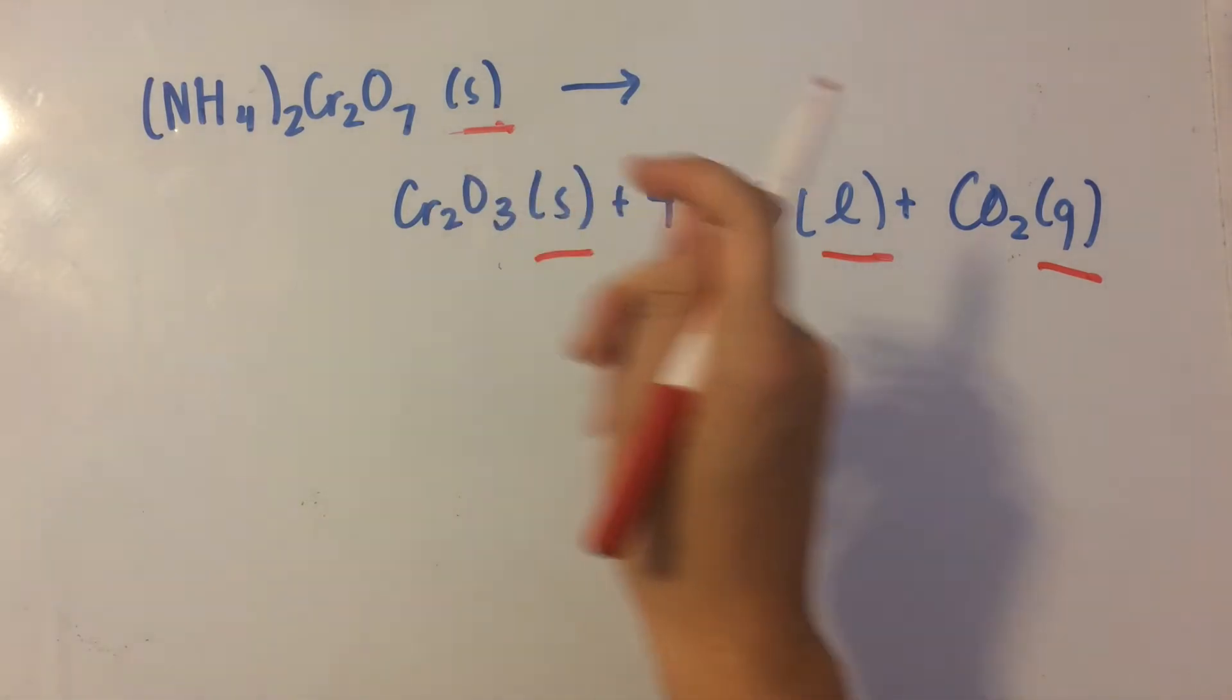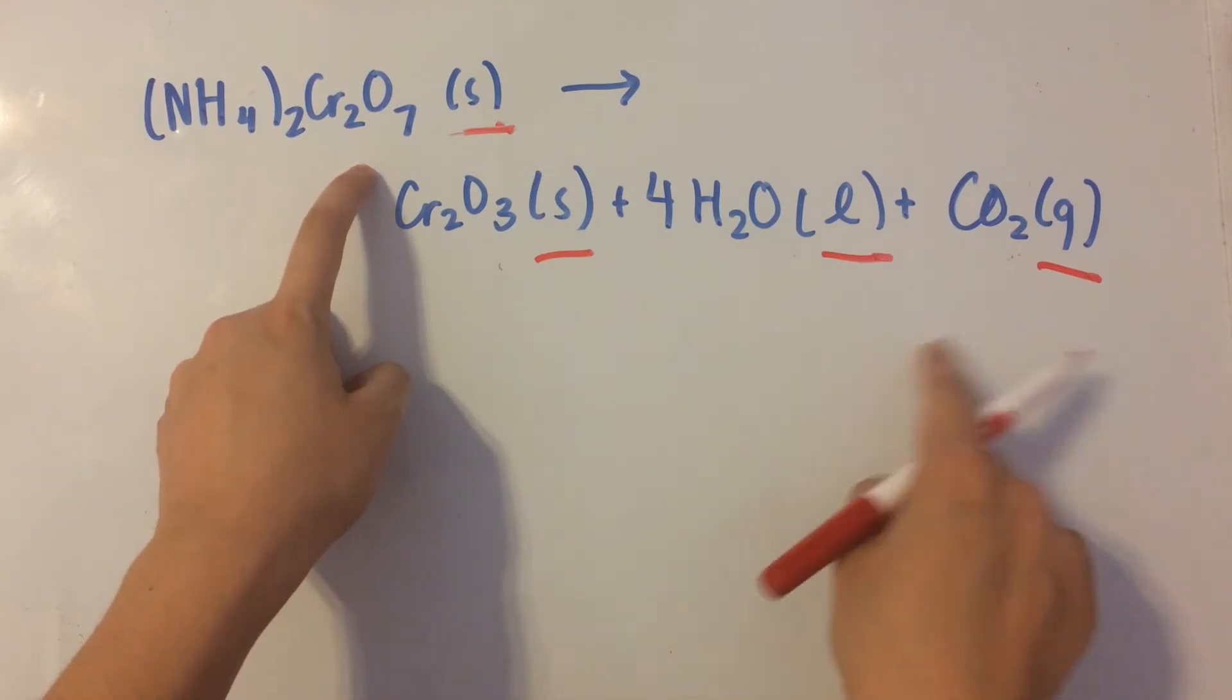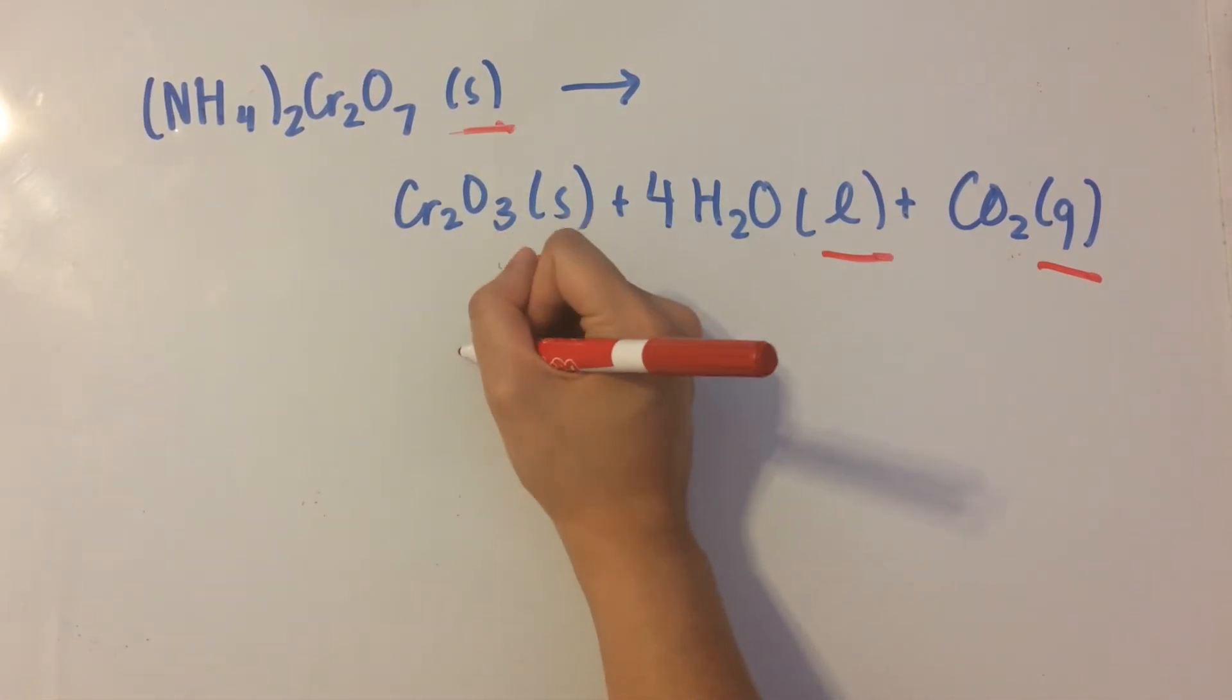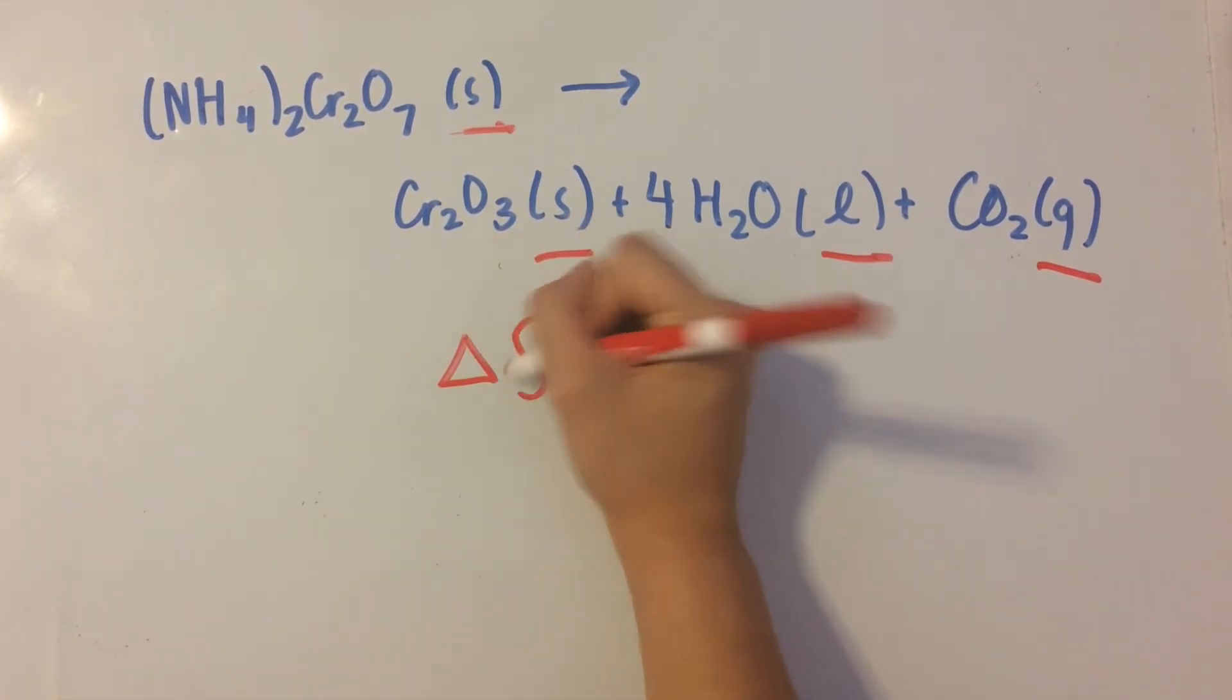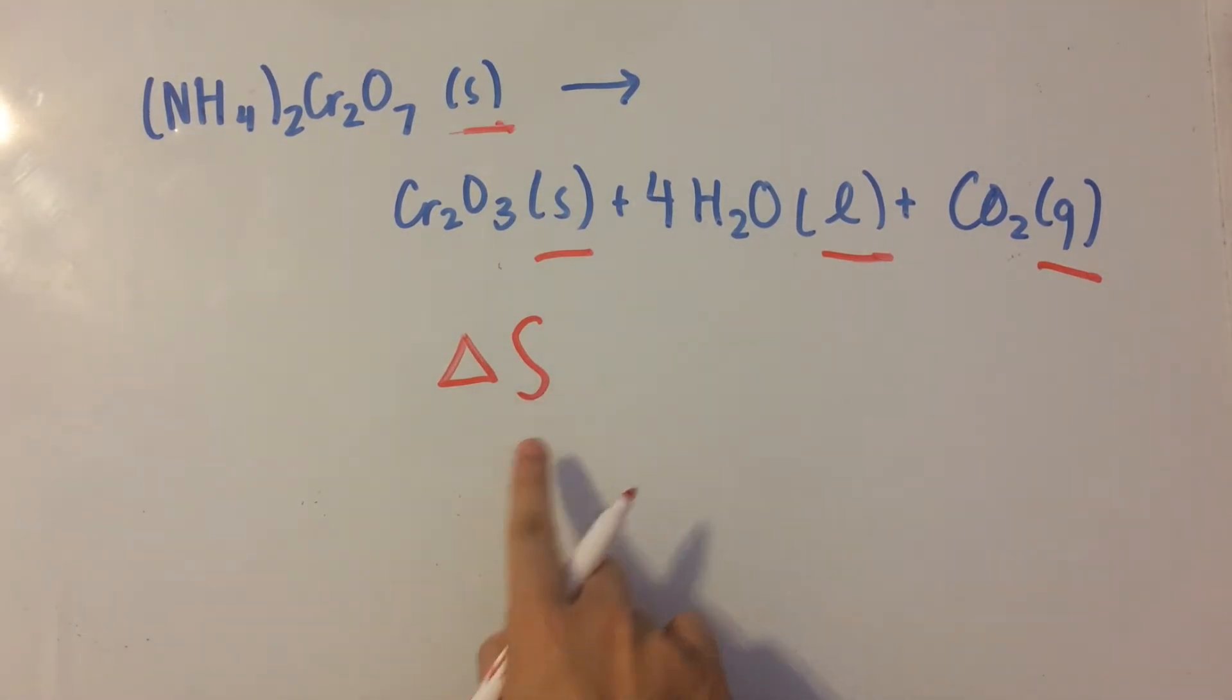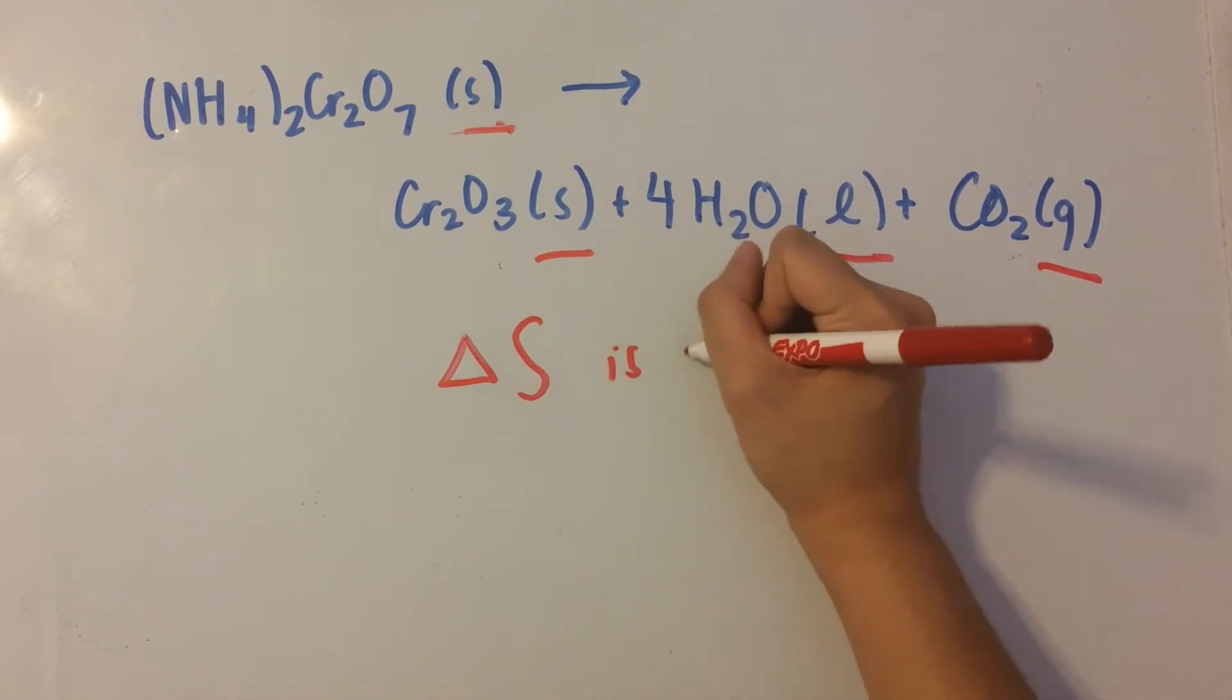So since we go from solids to solids, liquids, and gases, entropy increases. So we write that by saying that delta S, delta is change in, so the change in entropy is positive.